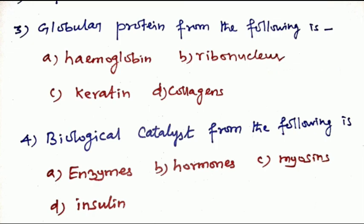Third question: Globular protein from the following. Which one is the globular protein? Option A: Hemoglobin. Option B: Ribonuclease. Option C: Keratin. Option D: Collagen. The answer is Option A and B both. Question number 5: Biological catalyst from the following. Option A: Enzyme is the biological catalyst.